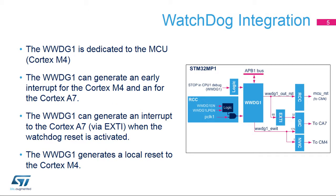The STM32MP1 includes a window watchdog dedicated to Cortex-M4 usage. WWDG1 is connected to the APB1 bus and the APB clock must be enabled via the WWDGEN bit prior to use of the WWDG1. The WWDG1 early interrupt output is connected to the NVIC and to the GIC so that both Cortex-M4 and A7 can handle the interrupt.